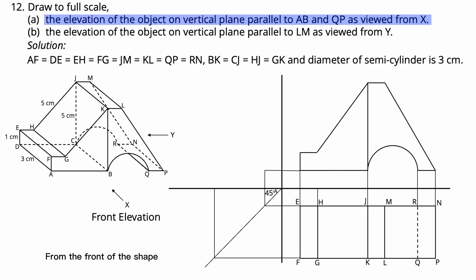From the front of the shape, start with A and B, F and E, G and H, K and J, L and M, P and N, Q and R, B and C. The elevation of the object as viewed from X is drawn.